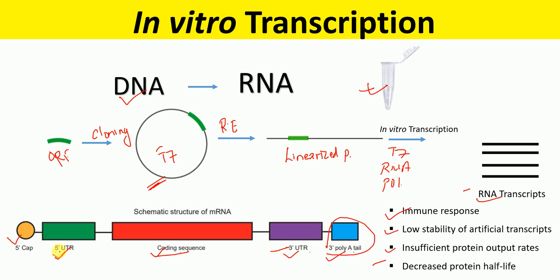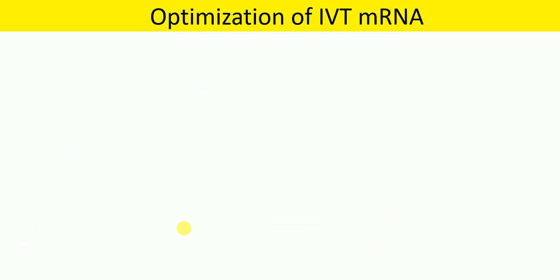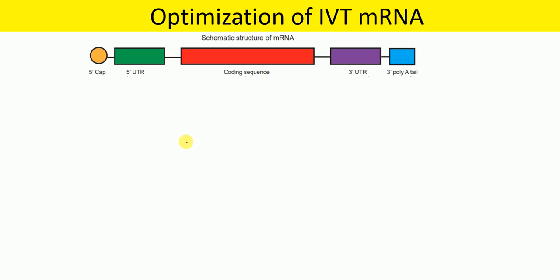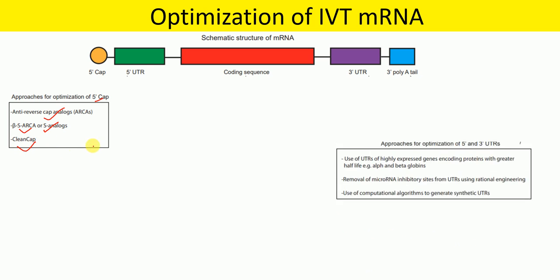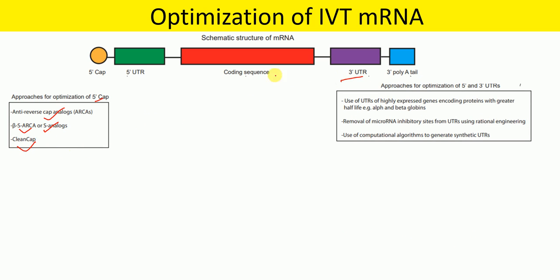To overcome these drawbacks, every component of the mRNA molecule can be optimized. For optimization of the 5' cap, we can use anti-reverse cap analog (ARCA), beta-S-ARCA, or CleanCap technology.